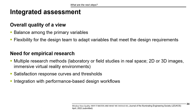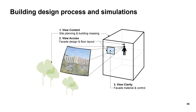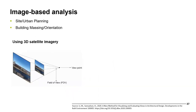Now, looking at how we can integrate view quality into the building simulation process — there are three different methods that can be used to simulate view quality corresponding to the three variables. The first, more related to view content or site planning and building massing, is image-based analysis. The second, related to view access, is spatial analysis. The third, related to view clarity, is temporal assessment.